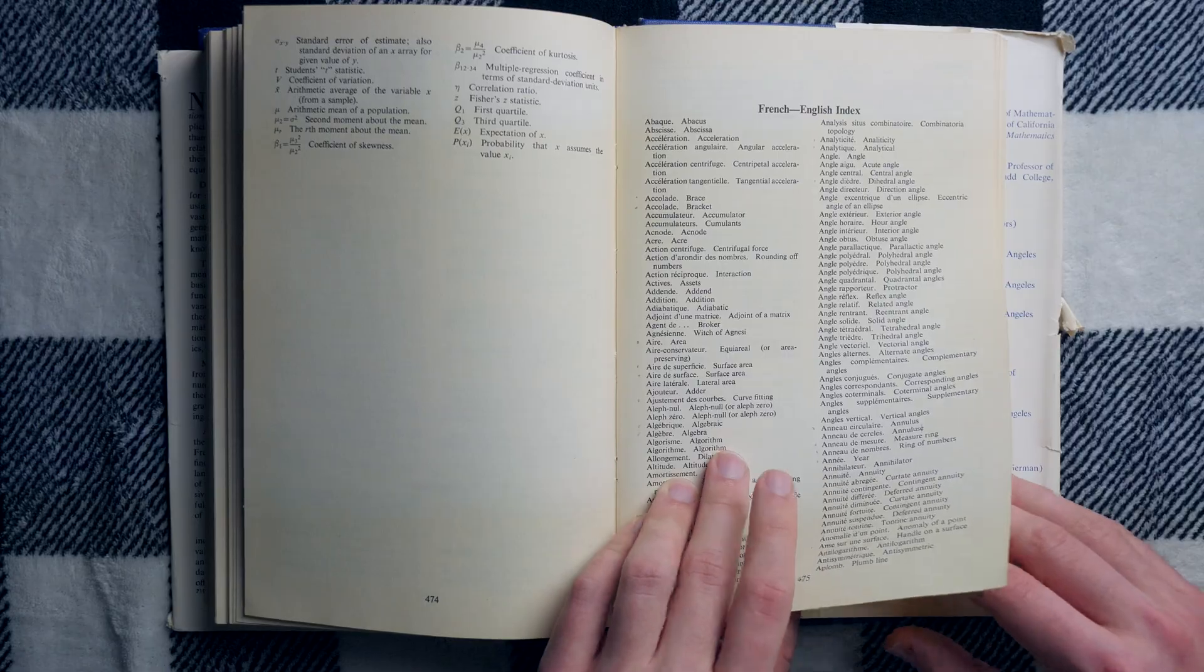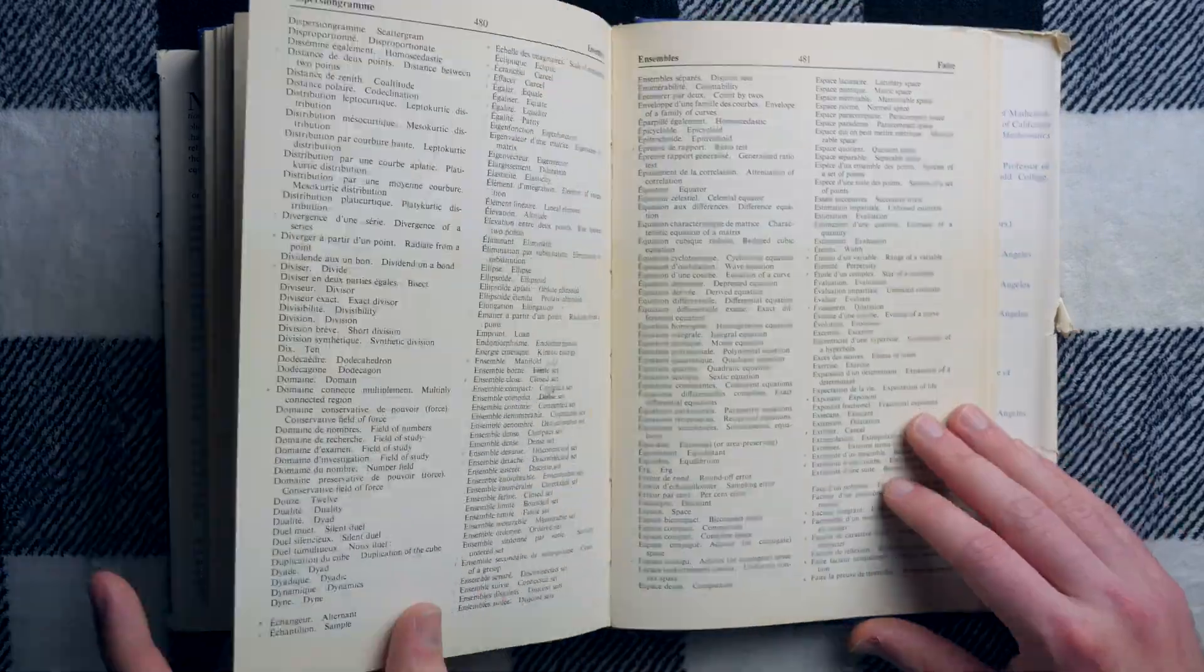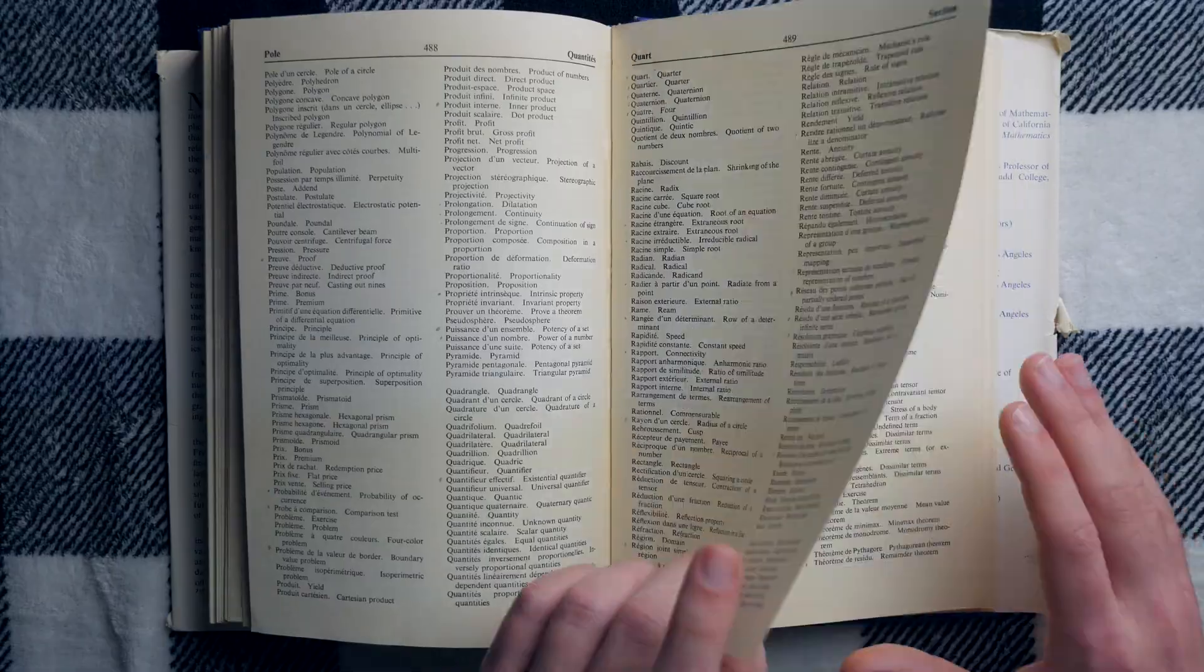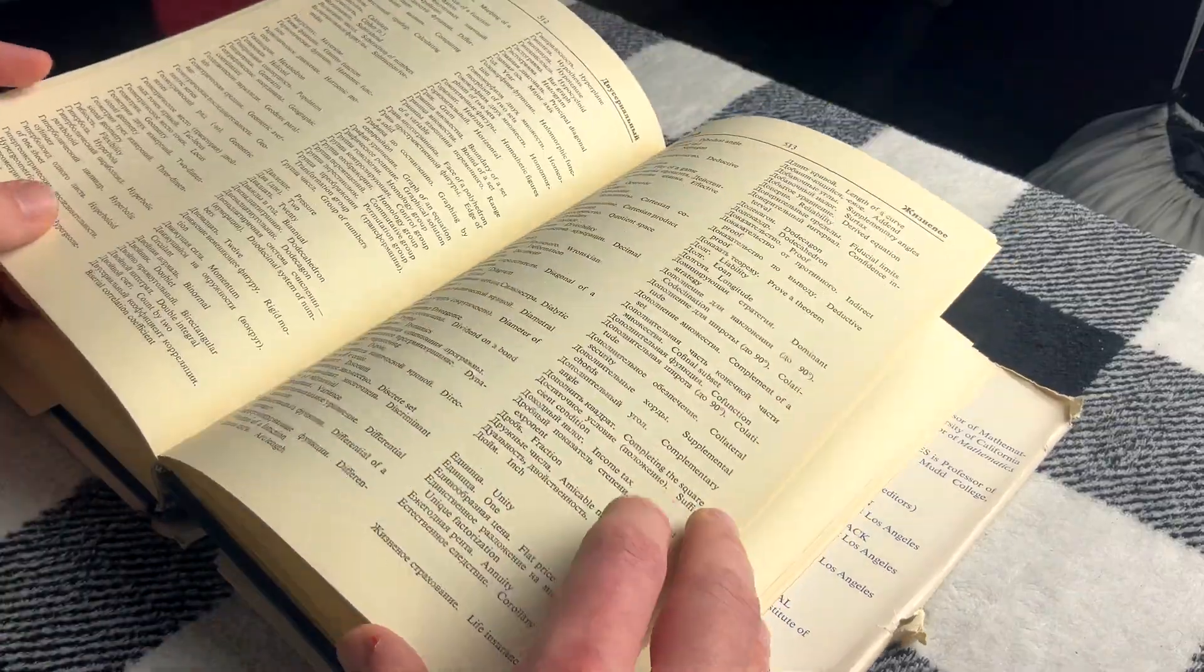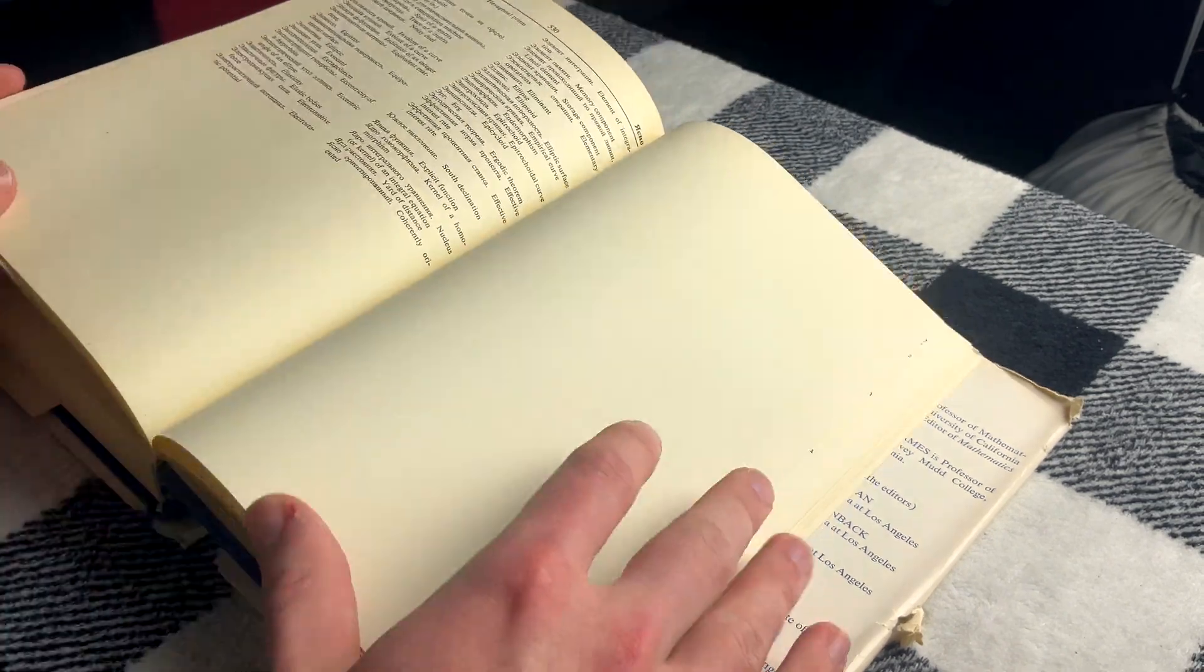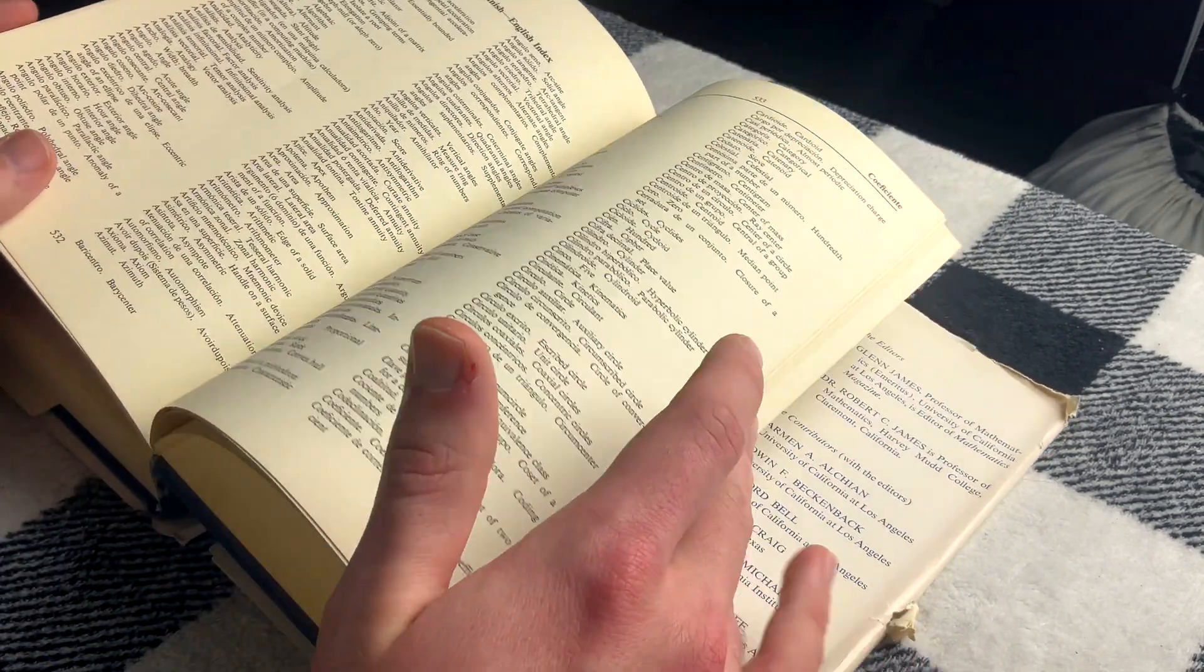Then you got your multilingual index. You got French to English, that goes on. It said it has Spanish, too, and I think it said it had German, also. So, pretty neat. I mean, there's so much stuff in here. Pretty big, useful reference.